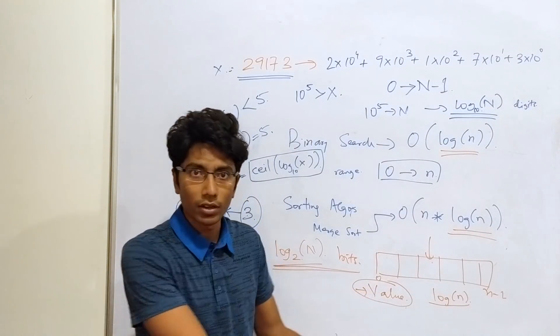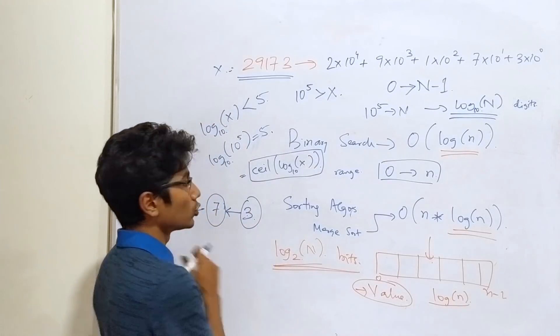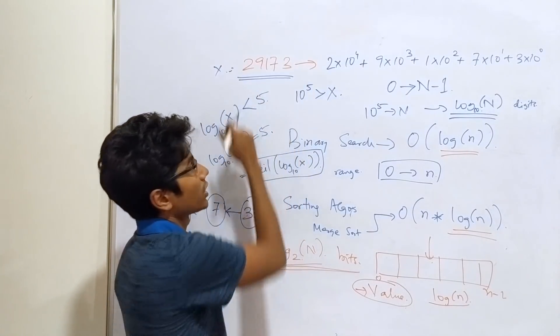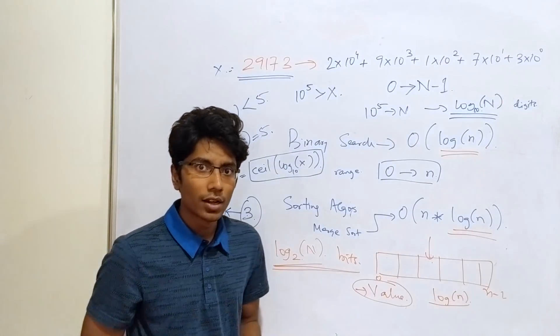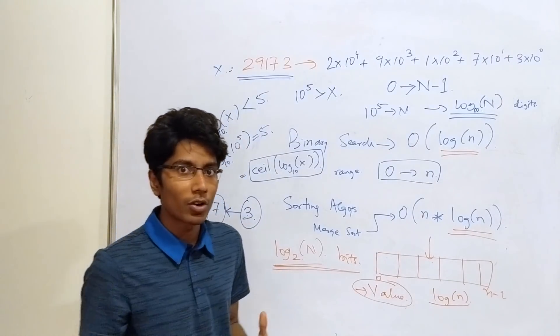you need log n operations for this search. Alright? You are choosing 1 by 1 by 1, just like you choose digits in this representation. So it takes you log n time. Okay? Cool. If you can wrap your head around that, then we have something even tougher.